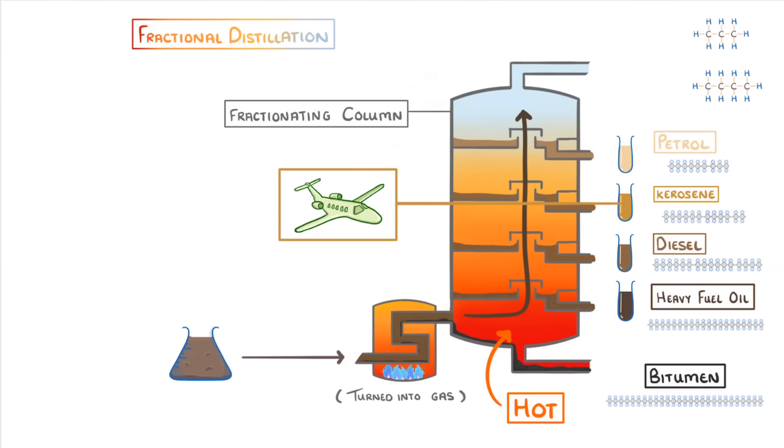Some hydrocarbons are so short and have such low boiling points that they stay as a gas the entire time. For example, LPG, which stands for liquefied petroleum gas, contains mainly propane and butane, which are both very short chain alkanes.